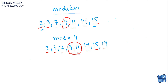If I add nineteen to that same data set — two, three, seven, nine, eleven, fourteen, fifteen, nineteen — I now have an even number of values. Chipping away, I get down to two middle terms: nine and eleven. When there's no single middle term, you average the two middle values. Nine plus eleven is twenty, divided by two is ten. So the median in this case is ten — which makes sense since ten is halfway between nine and eleven.